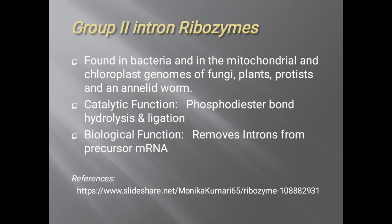Group 2 intron ribozymes use two mechanisms for their splicing: the self-splicing mechanism, meaning they do not need any other proteins or RNA, and another mechanism in which they need other proteins or RNA enzymes to catalyze the reaction, known as the spliceosome mechanism. Group 2 intron ribozymes are found in bacteria and in the mitochondrial and chloroplast genomes of fungi, plants, protists, and annelid worms. Their catalytic function is hydrolysis and ligation of the phosphodiester bond, and their biological function is to remove introns from precursor mRNA and join the exons together.